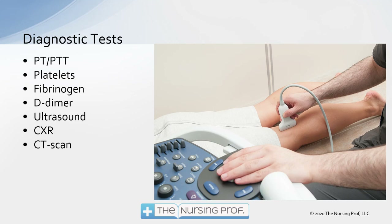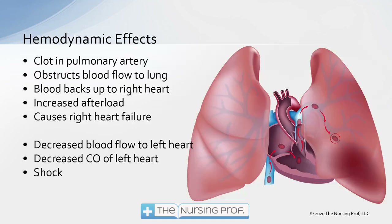Ultrasound is used to look at the lower extremities. A chest x-ray can help rule out other causes of shortness of breath and chest pain, and a CT scan can help find any vascular issues in the lung.